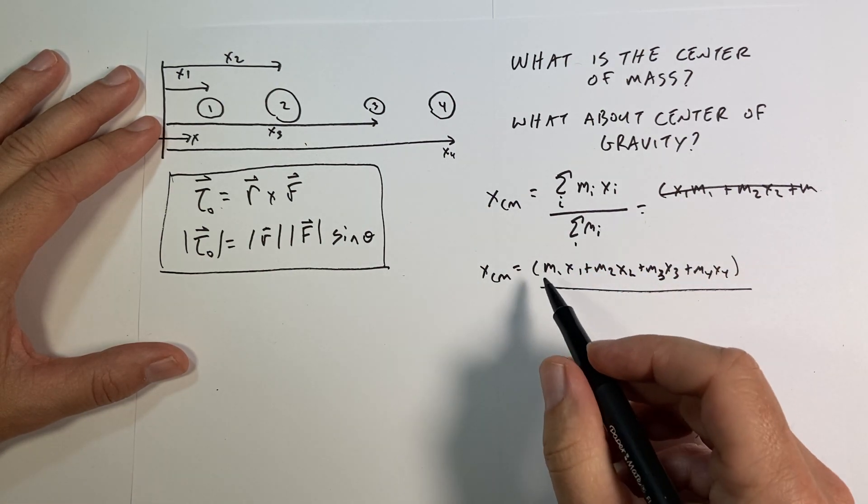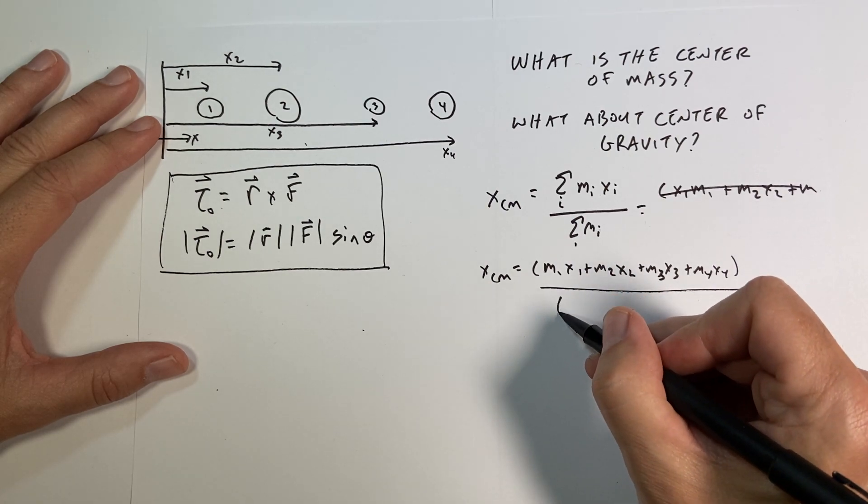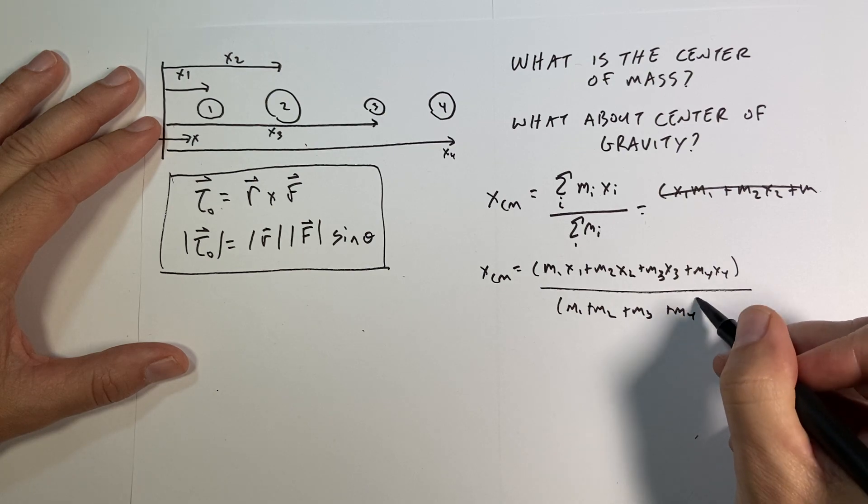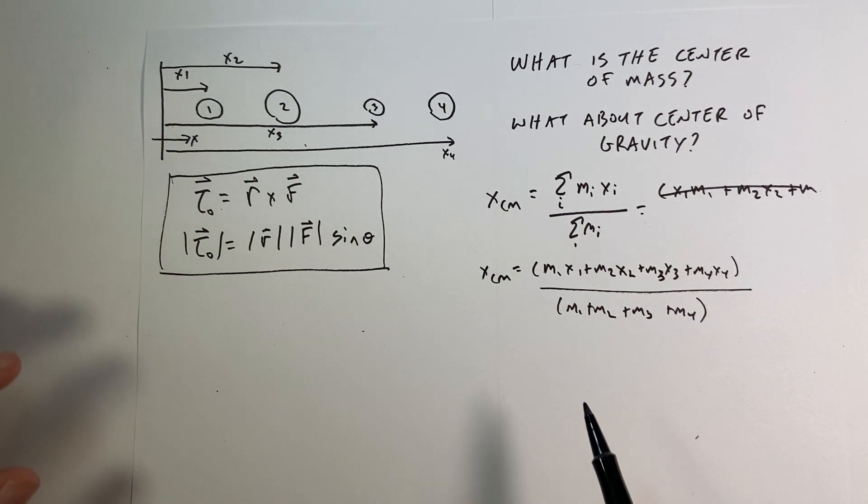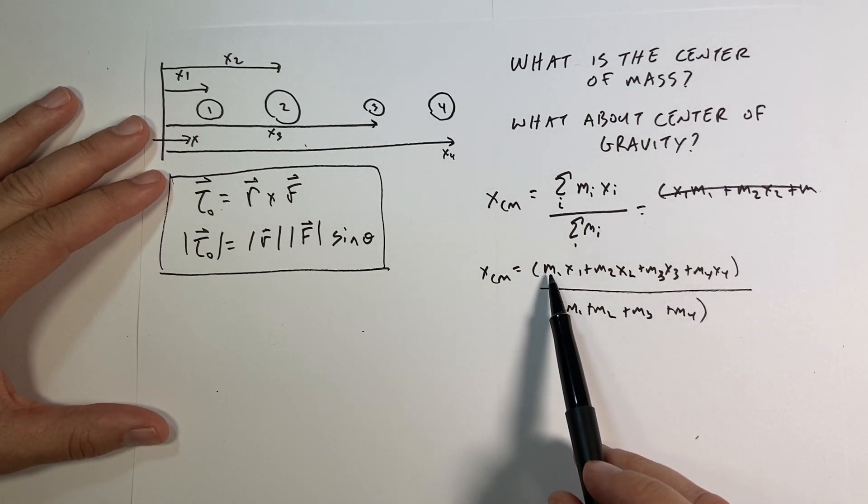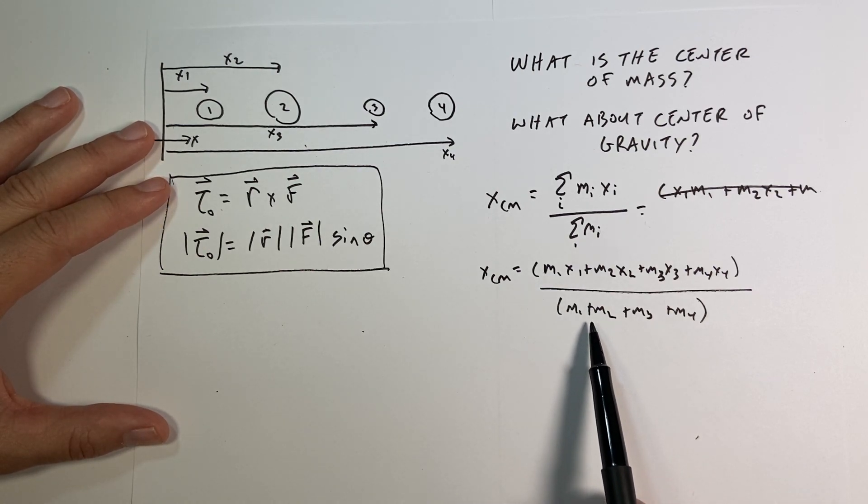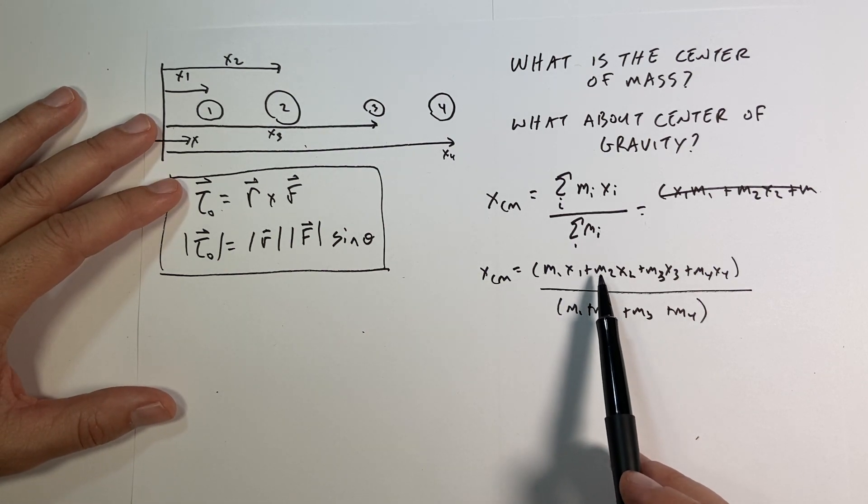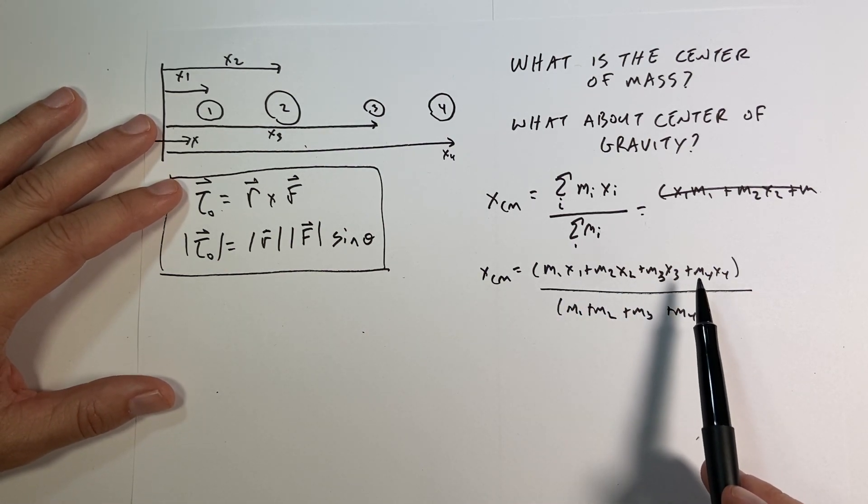All that over M1 plus M2 plus M3 plus M4. And that's it. Now you notice here that I have mass times distance on the top and mass on the bottom, so I get units of distance, which I should. If some of these are negative values, that's okay, you can do that.